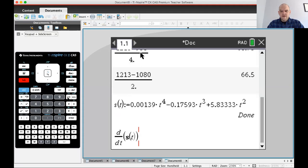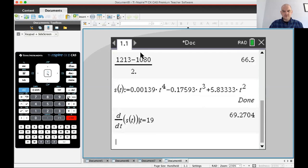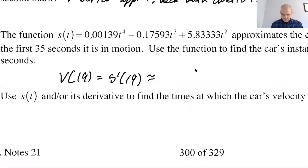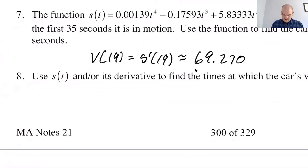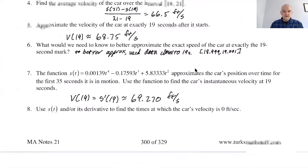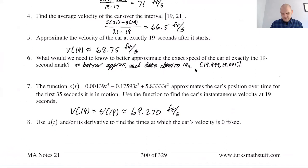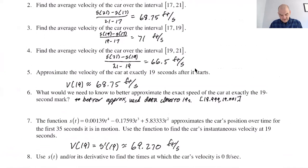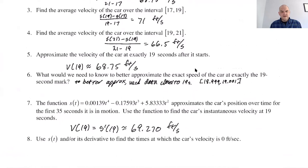I need to find the derivative of s(t) with respect to t and evaluate it at t equals 19. Because of all the decimals, the result will be a decimal: 69.270. So the instantaneous velocity at t equals 19 is 69.270 feet per second. My earlier estimate of 68.75 was pretty close — 71 was reasonable too, and even 66.5 would have been a valid guess based on the table.